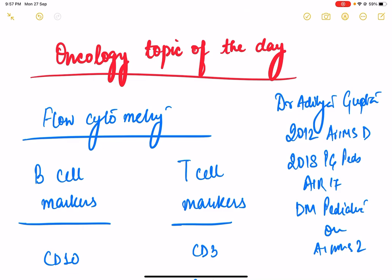Welcome to the Oncology Topic of the Day series. Today we are going to discuss a small bit about the flow cytometry markers for B-cell leukemia, T-cell leukemia, and myeloid leukemia.